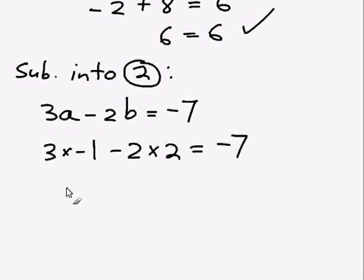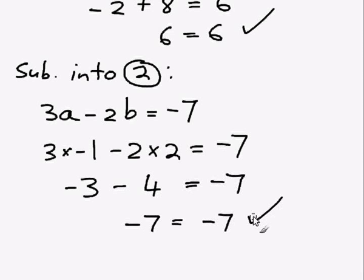Once again we're checking whether this equation is going to be true. So we get negative 3 minus 4 equals minus 7. Negative 3 minus 4 is just minus 7, so we get minus 7 equals minus 7.